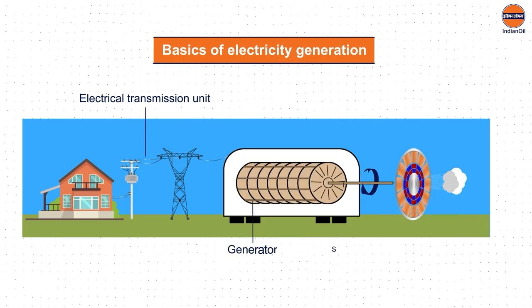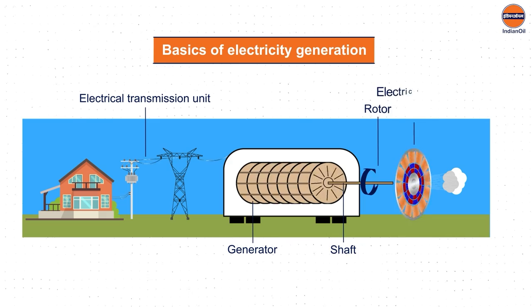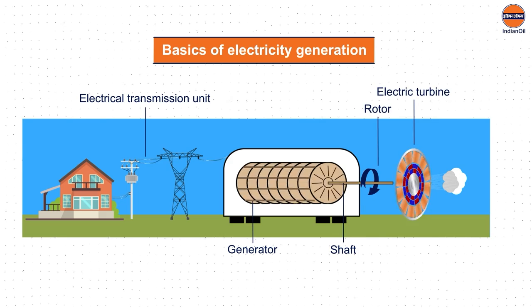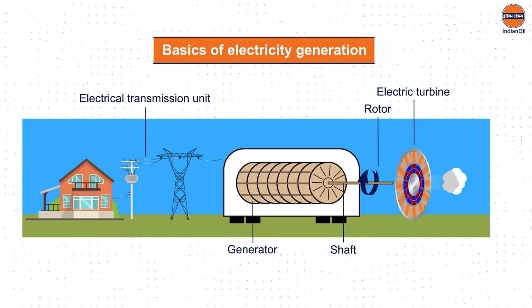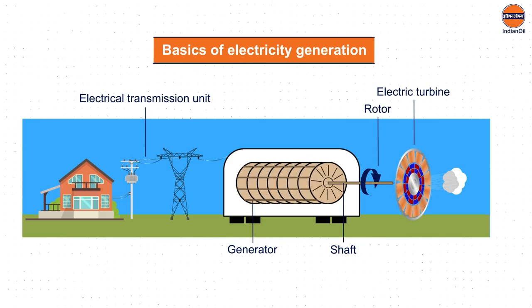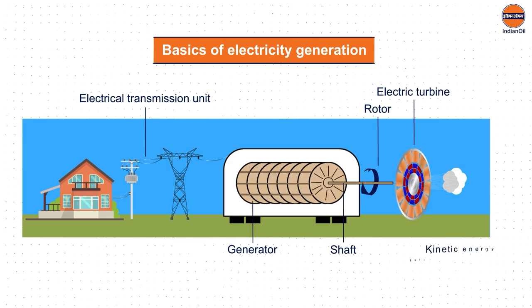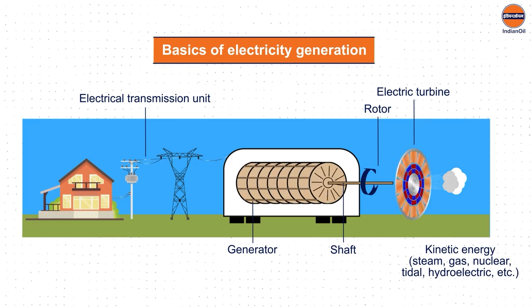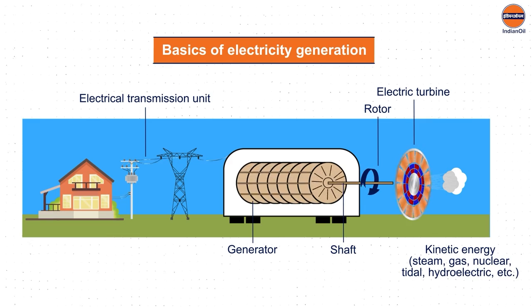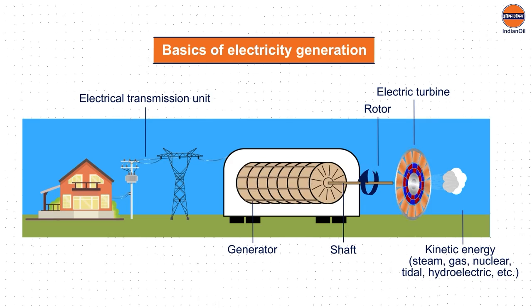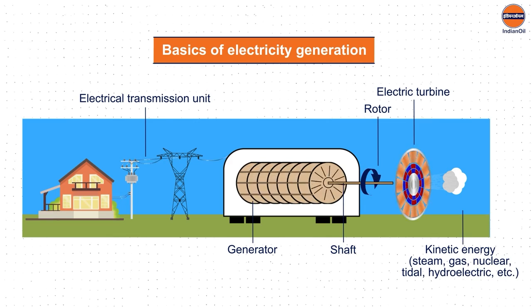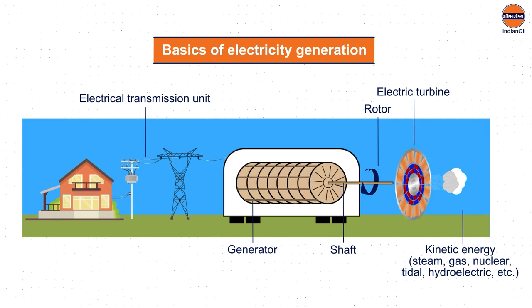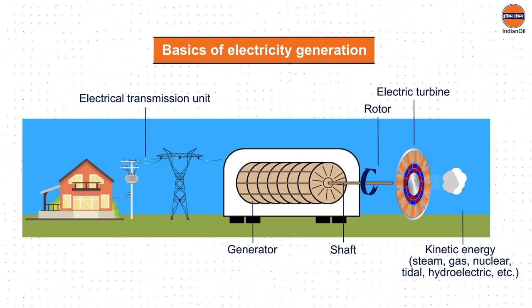Electricity is produced via the rotation of a generator within a power plant. It operates using kinetic energy sourced from steam, gas, nuclear, tidal, hydroelectric, and more.